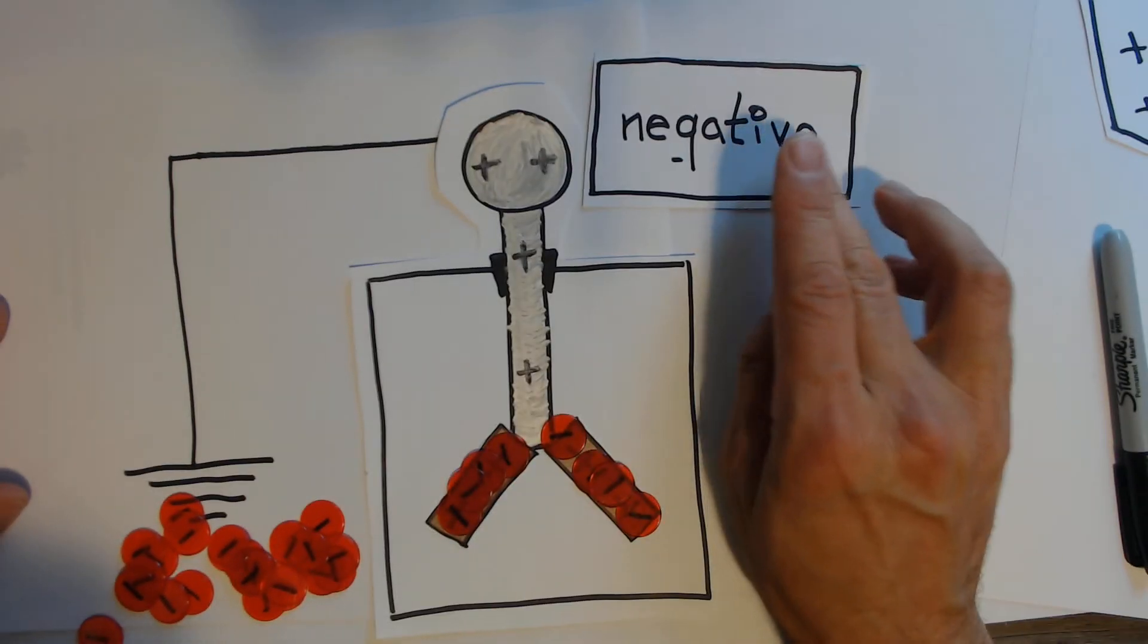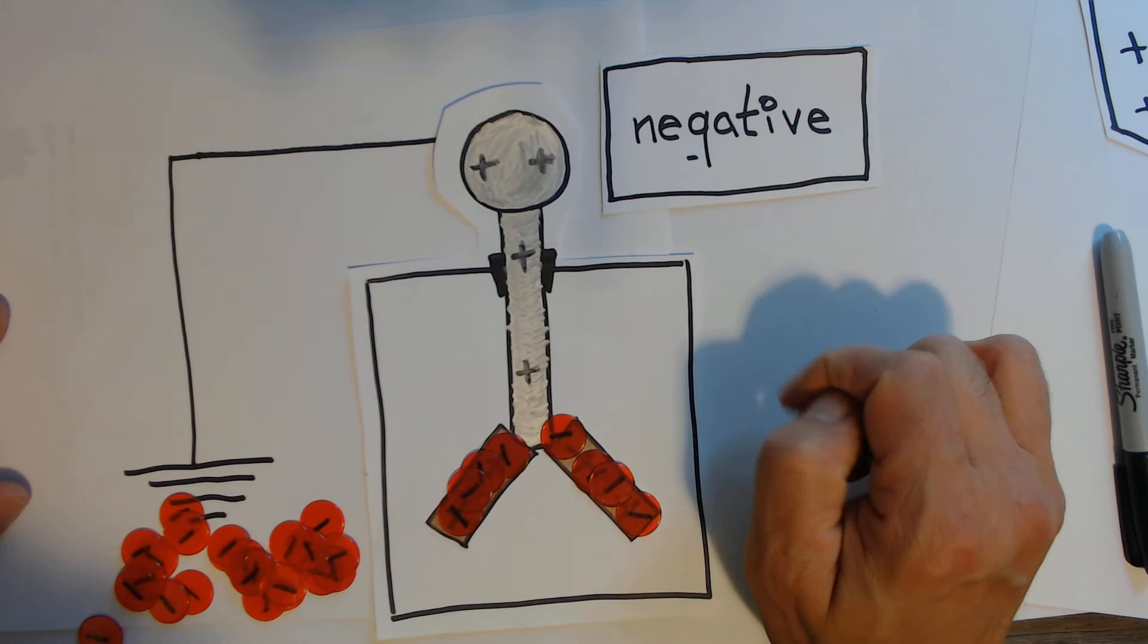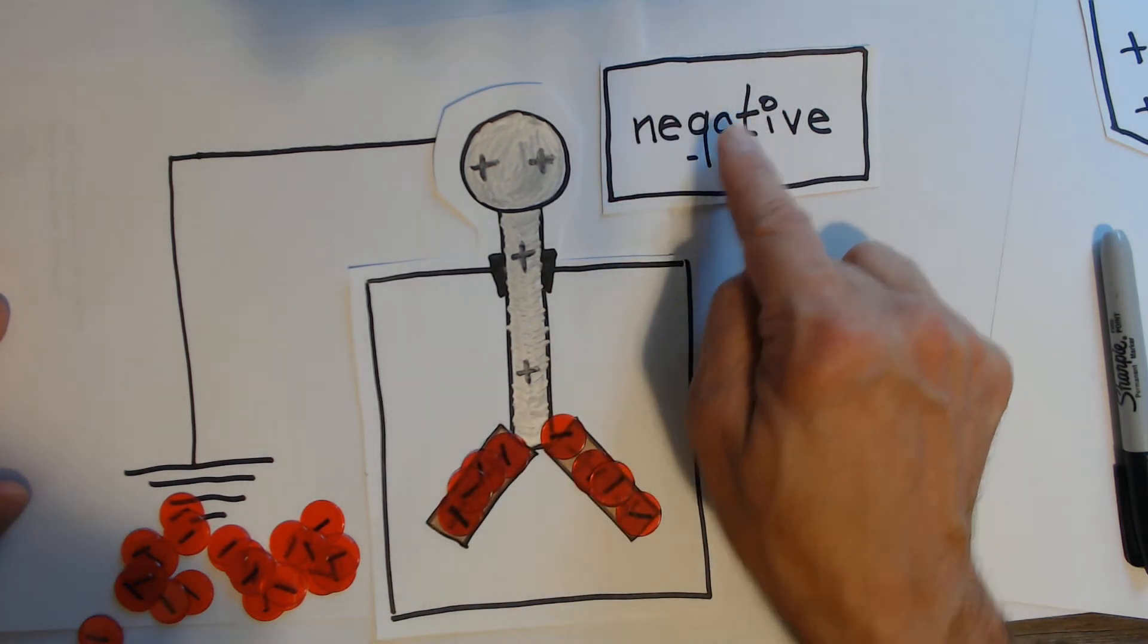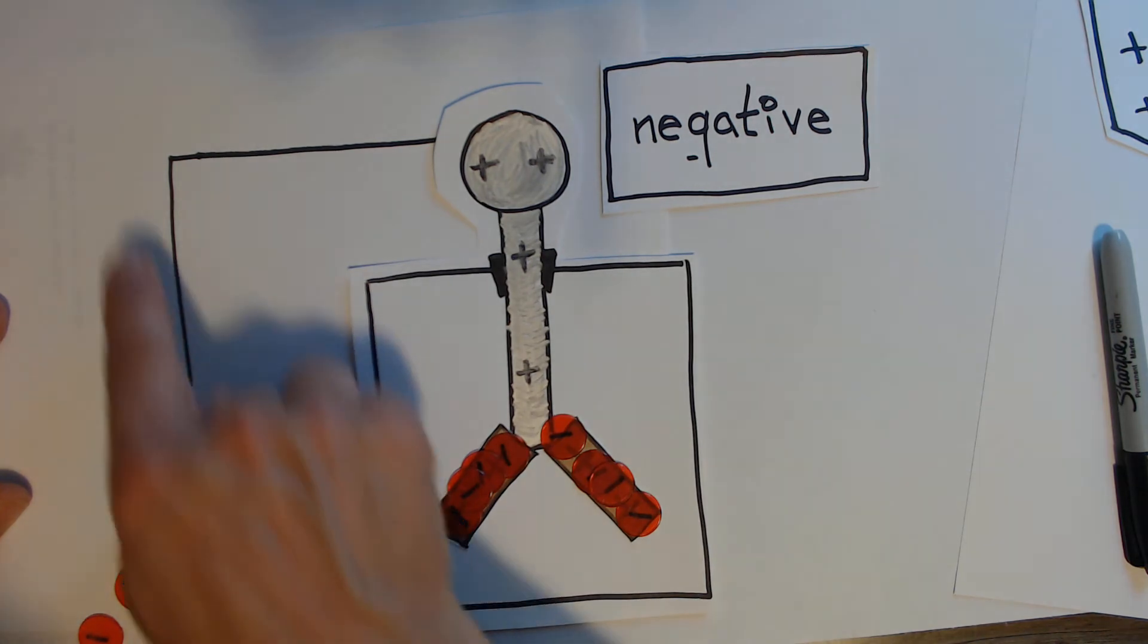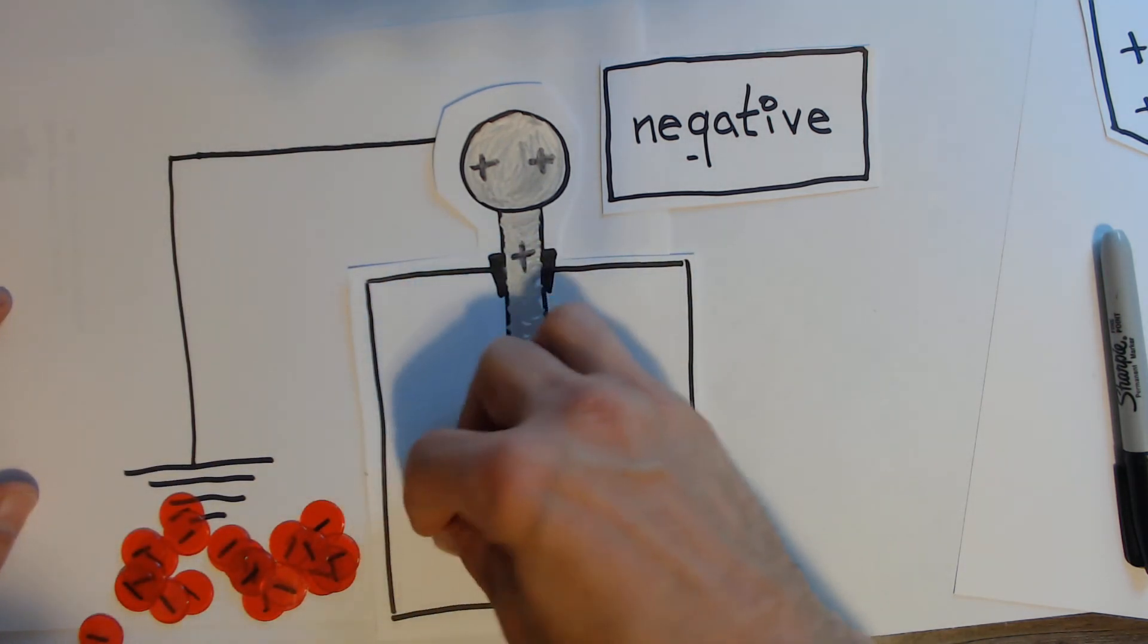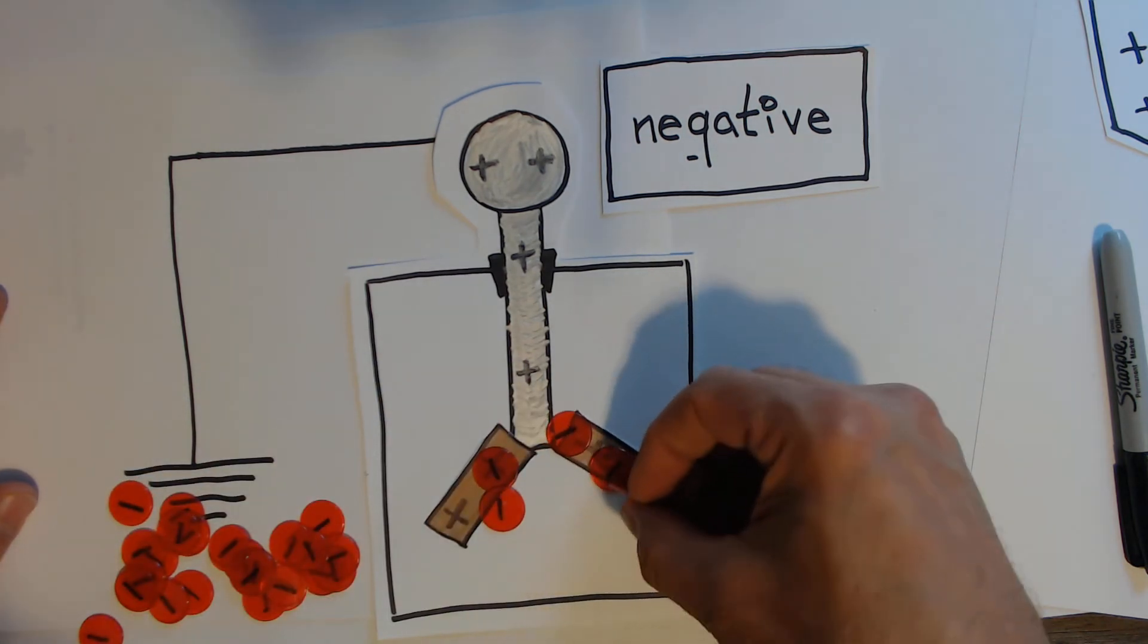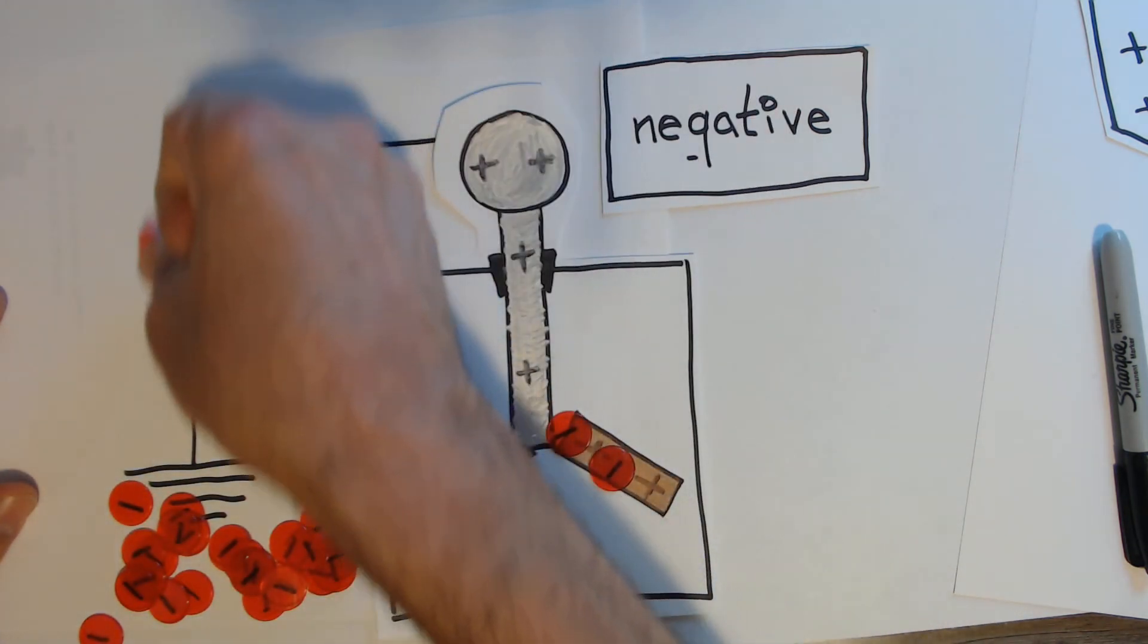So I bring the negative charges close, and now these negatives that are trying to get away from this negative, actually because they're a part of earth, they can now escape. Run away, run away, it's a negatively charged object, like charges repel.